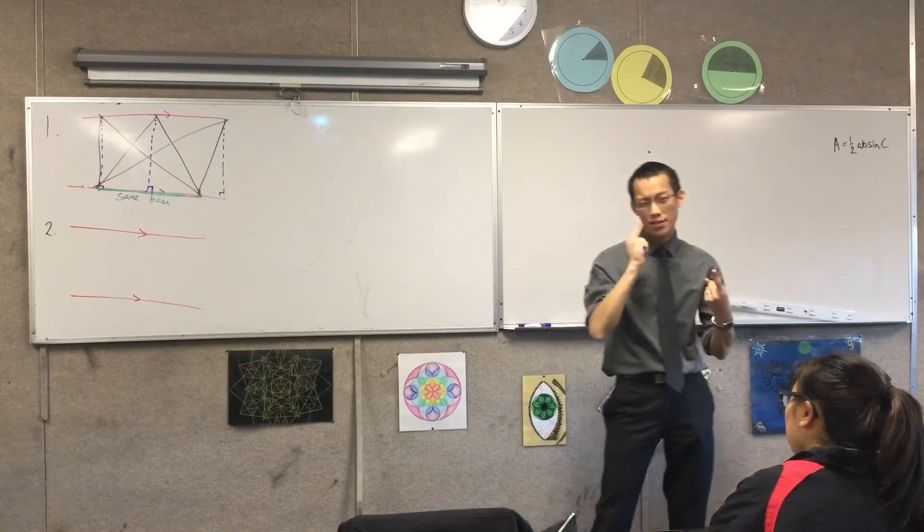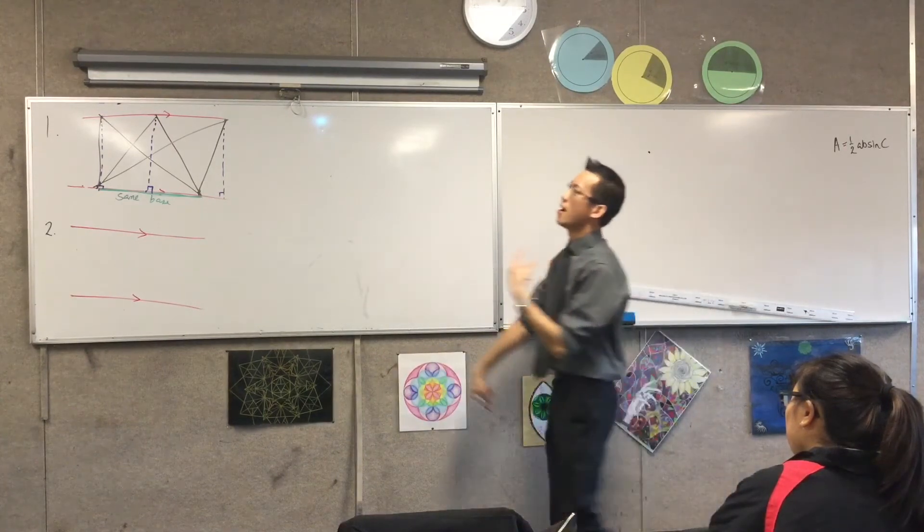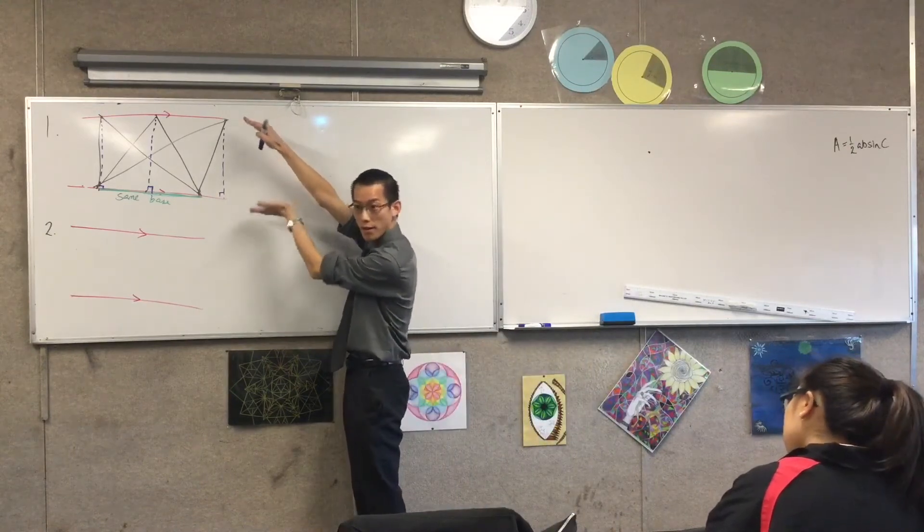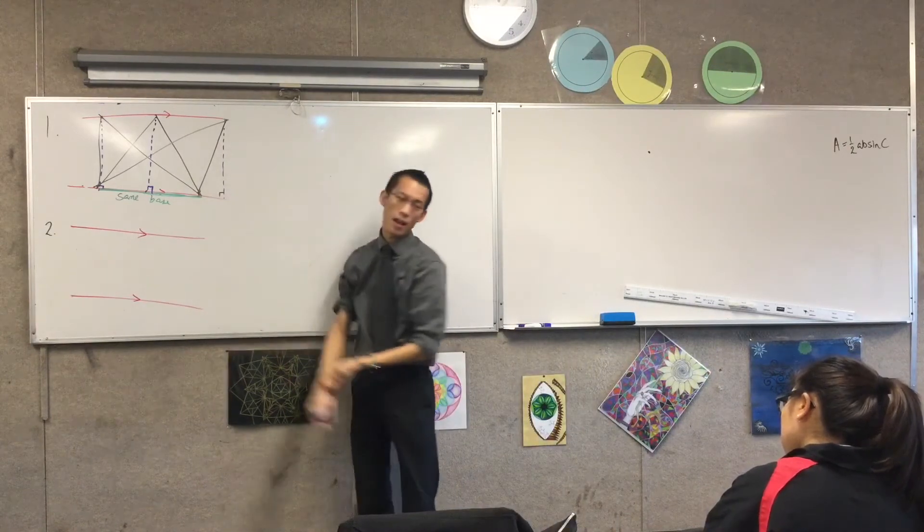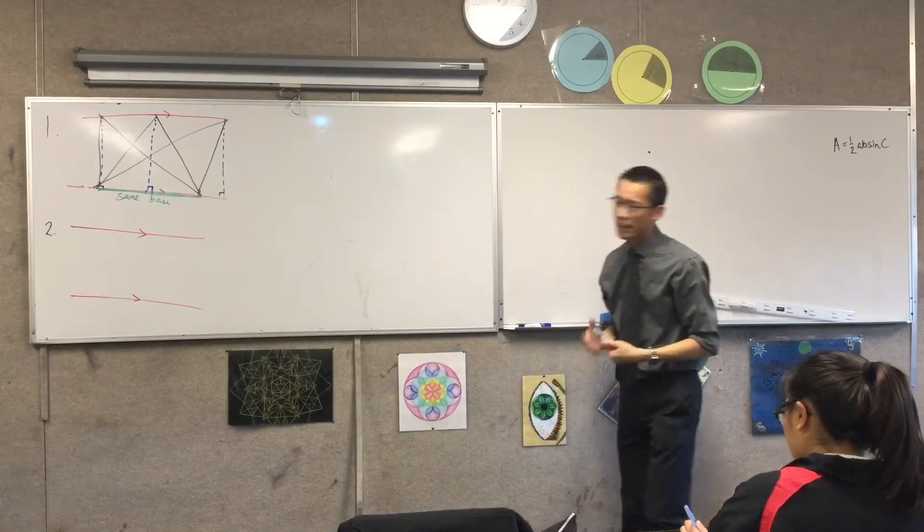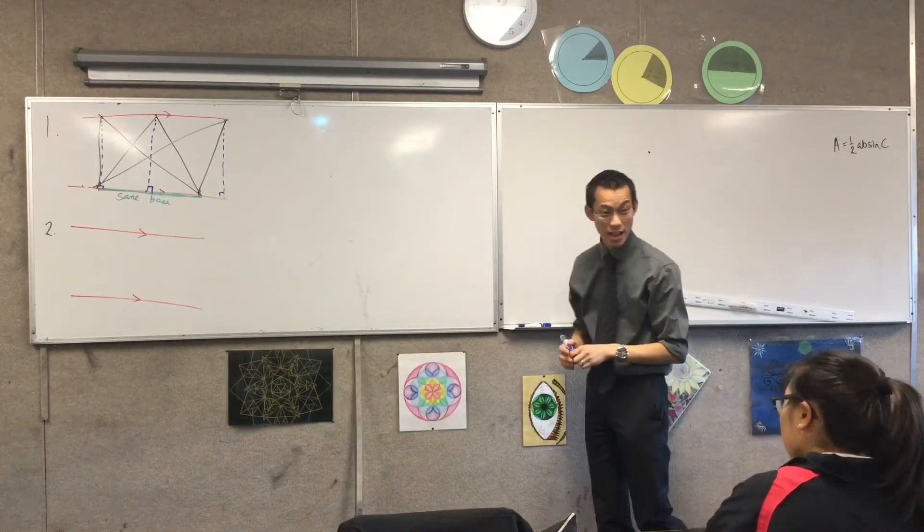Triangles that have the same base between parallel lines have equal area. That's all that's there. And I kind of think the diagram says that for you.